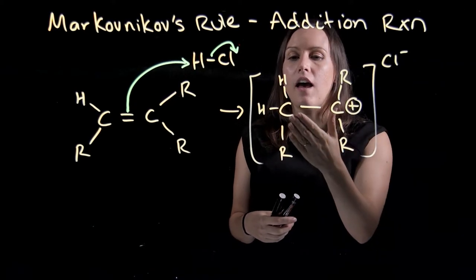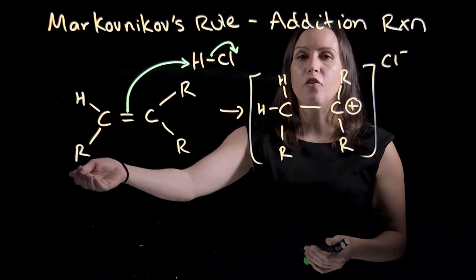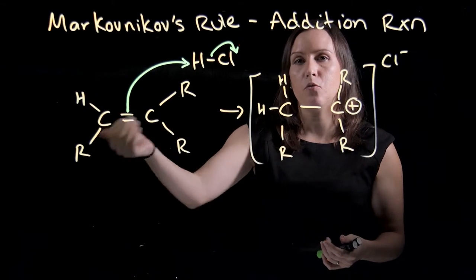In this case, we have a carbon with one R group, which is some sort of carbon chain, and a hydrogen. So this is a primary carbocation that would be produced.